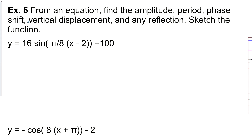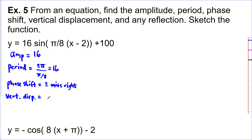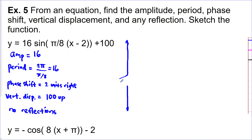Example 5: working from the equation, find the amplitude — the a value is 16, so amplitude = 16. The period: since we're working in radians, period = 2π / b = 2π / (π/8) = 16 as well. The phase shift is the c value: 2 units to the right. The vertical displacement or midline is the d value: 100 units up. There are no reflections in this equation.